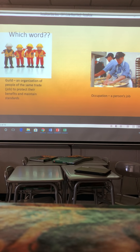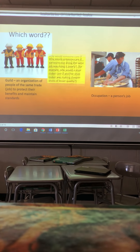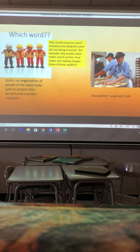When it comes to trades, we're not talking about trading a pencil for a piece of paper. We're talking about skilled work — for example, if I can weld, if I can do carpentry, some sort of thing where it's not just easy grunt work but something I have to learn. That is what's called a trade. A guild is an organization of people of the same trade to protect their benefits and maintain standards.